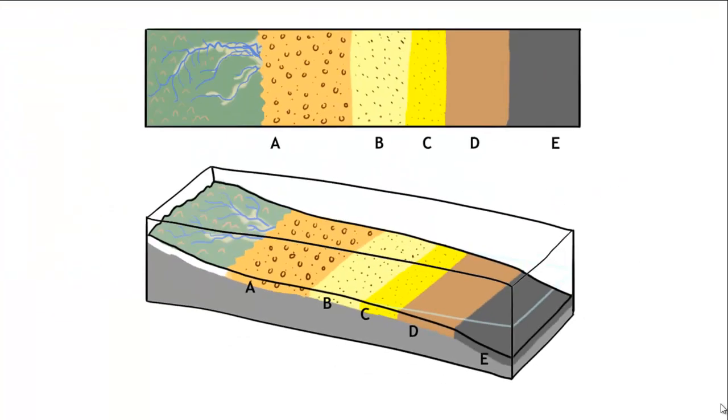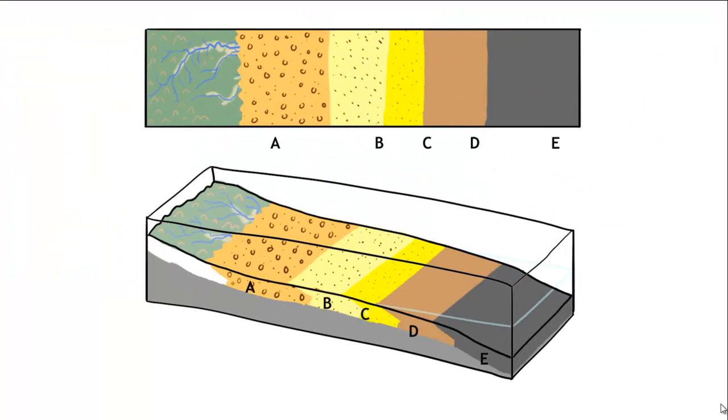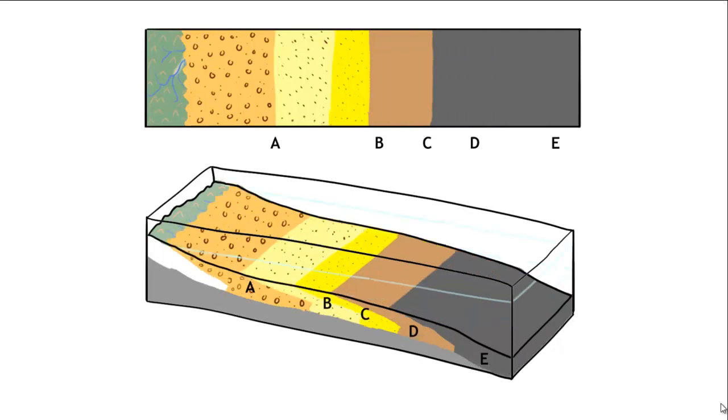Now what happens if sea level goes up? Well, sea level goes up, and then all those different facies track with the new sea level going inland. And if sea level were to go up a little bit further, they would track inland a little bit more.